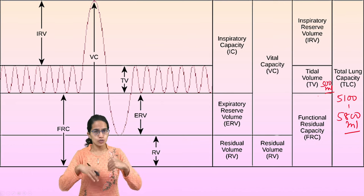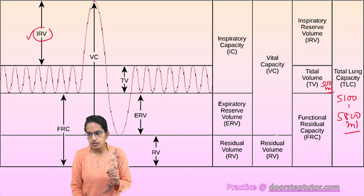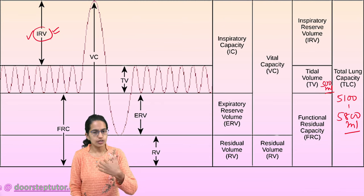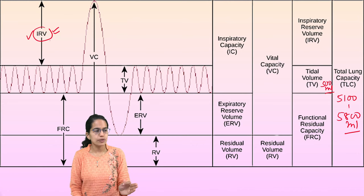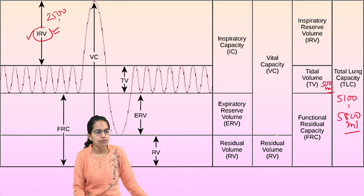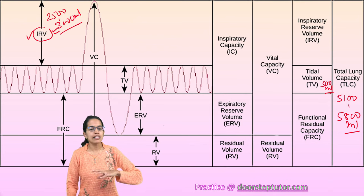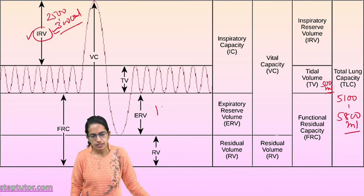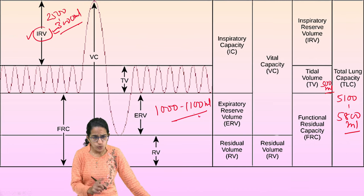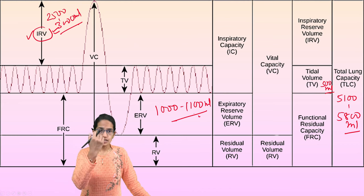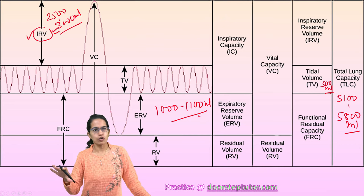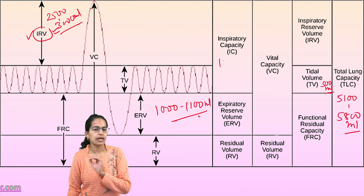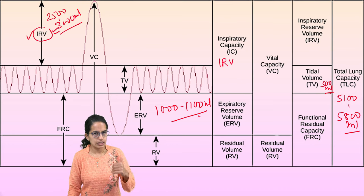When extra effort is made to inhale beyond tidal volume, it is the inspiratory reserve volume (IRV), which is around 2500 to 3000 ml. When forced breathing out is performed, it is the expiratory reserve volume (ERV), around 1000 to 1100 ml. The total inspiratory capacity (IC) includes the inspiratory reserve volume plus the tidal volume.